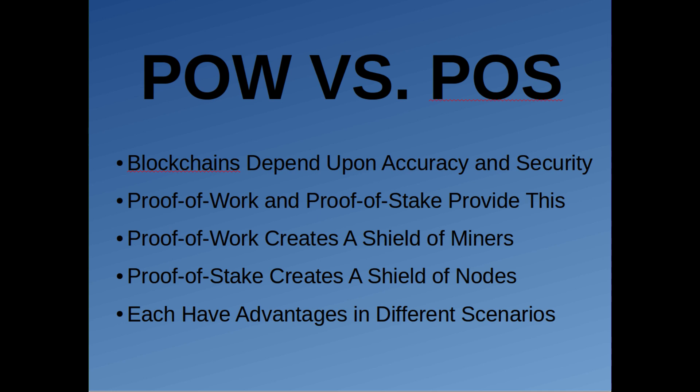Alright everybody, I'm bringing you another video on cryptocurrencies. Today we're going to be focusing on proof of work and proof of stake. If you don't know what those words are, you really need to learn them if you want to understand cryptocurrencies and cryptography in general, or blockchains. Proof of work and proof of stake are the two algorithms or protocols by which blockchains ensure network accuracy and security.